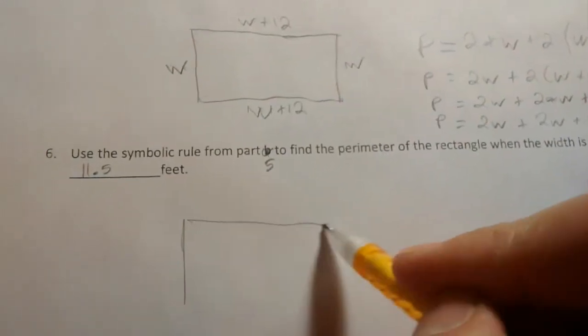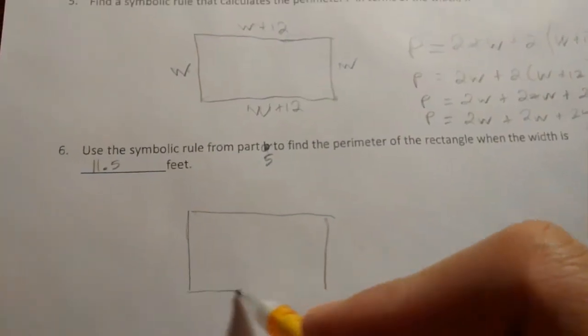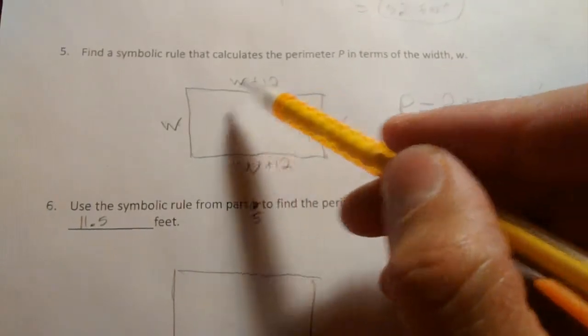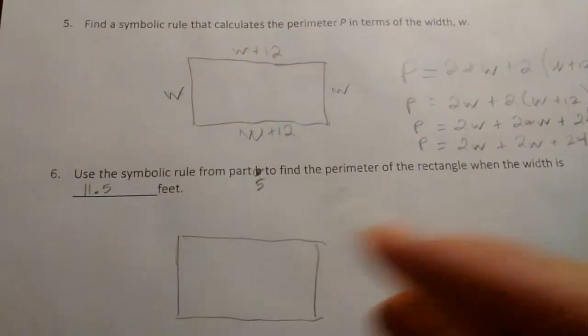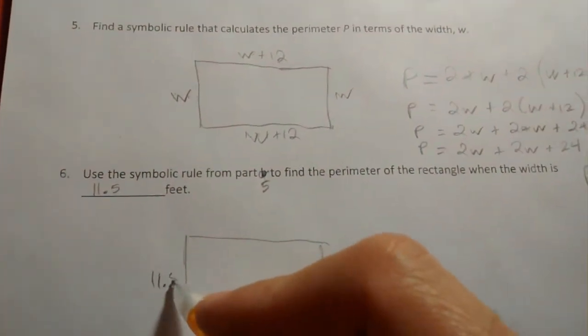Here we have the same type of information where the length is 12 more than the width, and the width is now 11.5 feet.